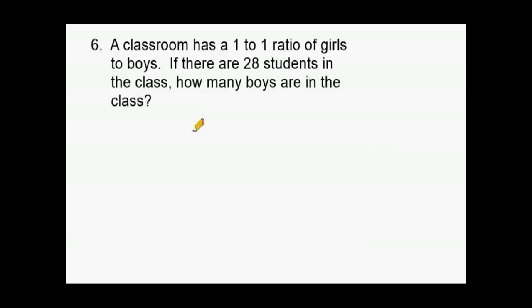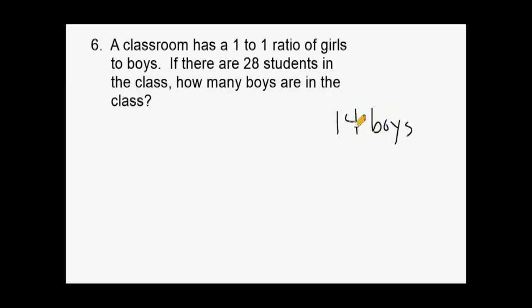This problem reads that a classroom has a 1 to 1 ratio of girls to boys. If there are 28 students in the class, how many boys are there? Because a 1 to 1 ratio means an identical amount of girls and boys, we can simply cut 28 in half, giving us 14 girls and 14 boys. So there are 14 boys in the class — this problem can be done through mental math.